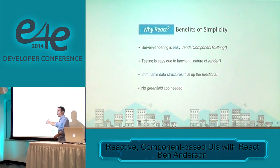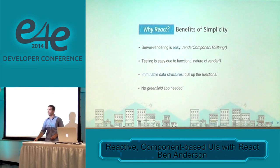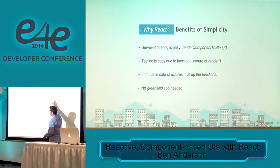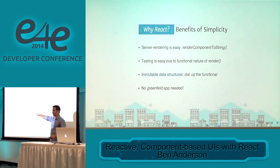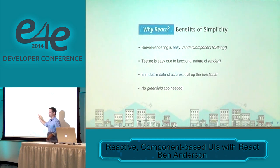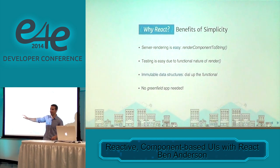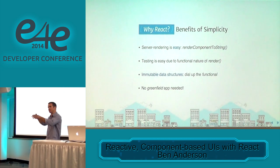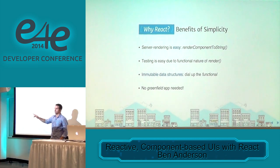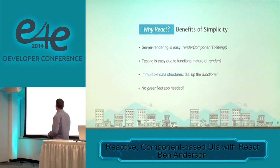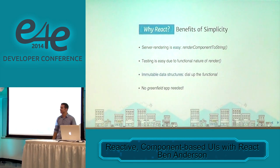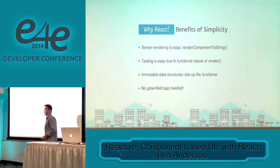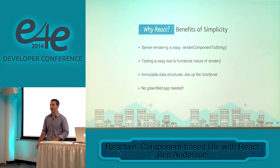Out of this simplicity, a whole bunch of other fun things fall out. Like server rendering — we're not dealing with the DOM anymore. There's renderComponentToString, and that works not just in Node but in Rails and Java too. Facebook also released an immutable data structures library for JavaScript which helps with functional patterns. And no greenfield app needed — you can start rendering one button on your UI in React. It doesn't need to take over your application. You don't need to rewrite everything. I don't work for a company that builds a new to-do list application every month, so I don't get to use all these new frameworks as they come out.